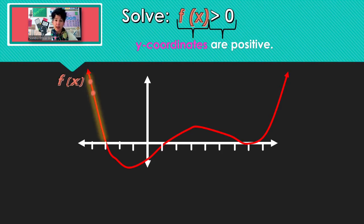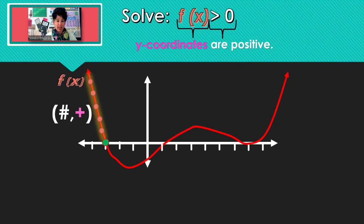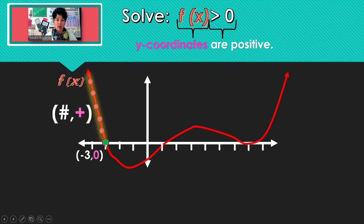All the points along there have positive y-coordinates, so that section is part of our solution. When we reach the x-intercept at negative 3 comma 0, the y-coordinate is now 0, and we want y-coordinates that are positive. So that x-intercept is not part of our solution.